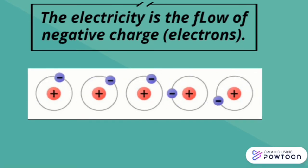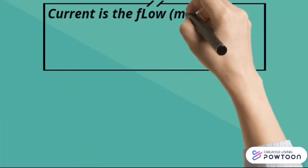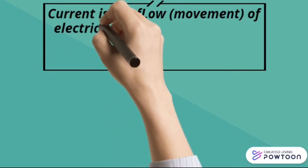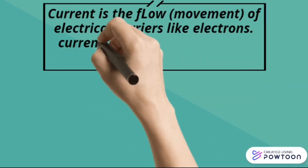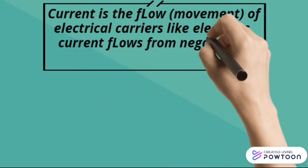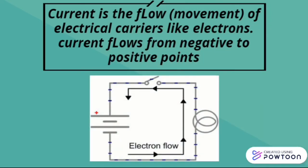The current is the flow, or movement, of electrical carriers like electrons. Current flows from negative to positive points. This image shows the movement of electrons from the negative point of the battery to the positive point of the battery.